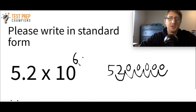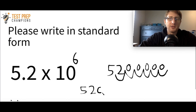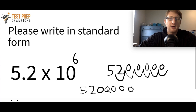Another trick is: if you've got something like 5.2 times 10 to the 6th, start by writing 52. Then take the exponent — in this case six — and subtract one. That's how many zeros you're going to add. So we've got a six up here, and when I write my number in standard form, I put five zeros. We'll go over more examples to make this make more sense.